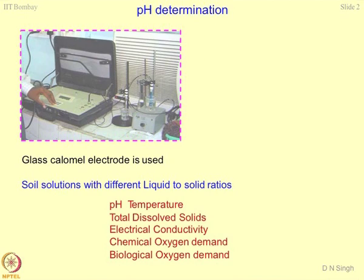You can also use this water quality analyzer for determining total dissolved solids, which is indicative of the turbidity of the solution — a good alternative if you cannot use a UV spectrophotometer. You can determine electrical conductivity of the soil solution at different L by S ratios, and electrical conductivity can also be linked with TDS of the suspension. You can also find out chemical oxygen demand (COD) and biological oxygen demand (BOD), and these parameters are very handy in defining the corrosion potential of the soil mass, along with pH, electrical conductivity, and redox potential.